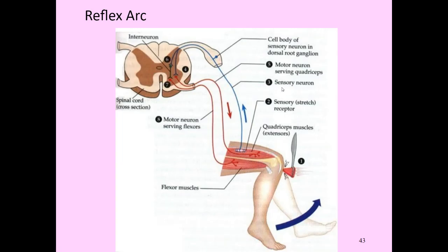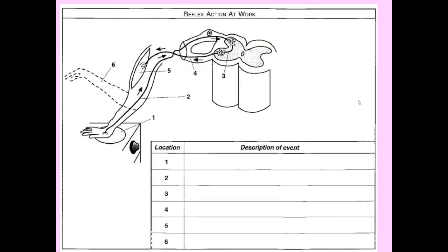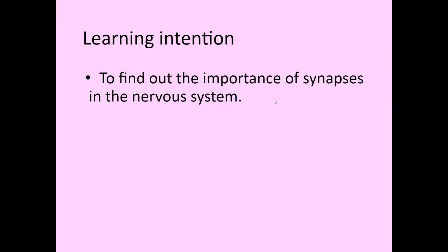Here is yet another summary of reflex arcs which you can look at. Doctors also test for reflexes in the flexor muscles by hitting you with a tendon hammer just below the knee — that gives you the knee-jerk reflex. In the next lesson, we will look at synapses of the nervous system and complete this topic. Hopefully that made some sense — if you've got any problems with it, please do ask.